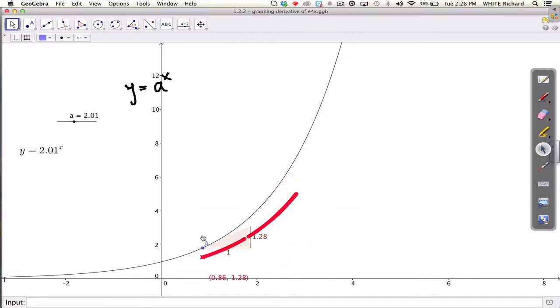And as I drag it around, you can see that this red curve is the derivative of the graph of 2 to the x, or 2.01 to the x.